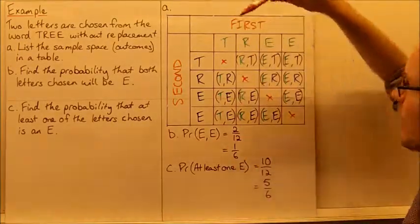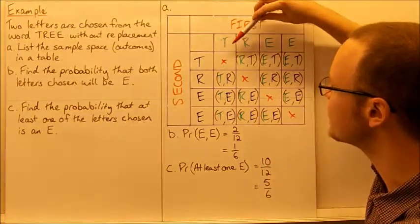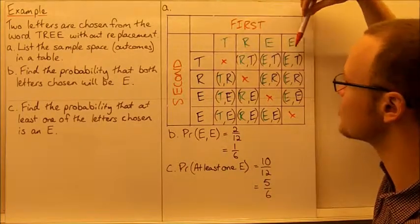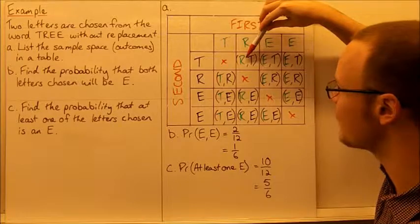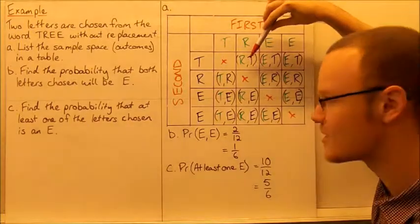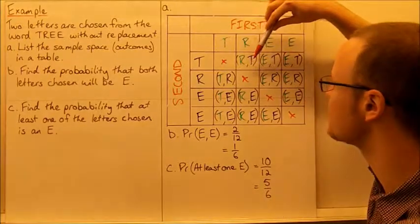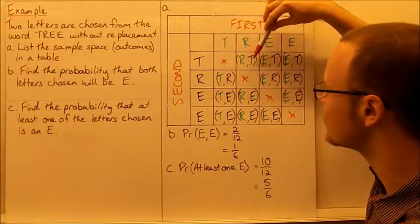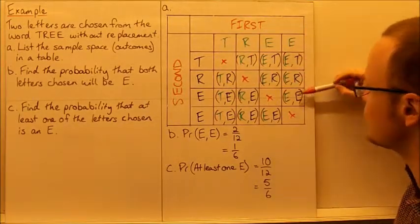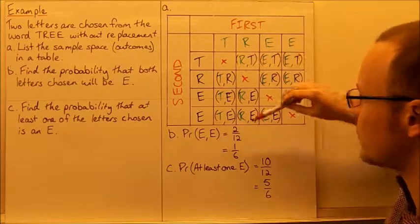I've color-coded each of the outcomes to make it easier to see where they come from. The aqua color represents the first letters chosen. This would be choosing R first and then choosing T, because the darker blue ones are the second choice, the second component. So this is choosing R then T, this is choosing T then R, and this down here is choosing one E then another E. I've listed all of the possible outcomes.